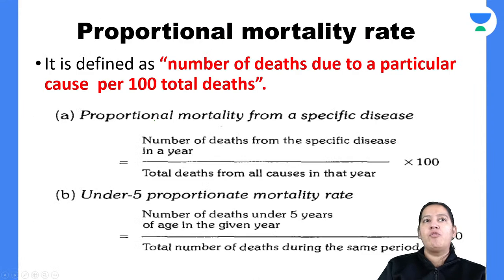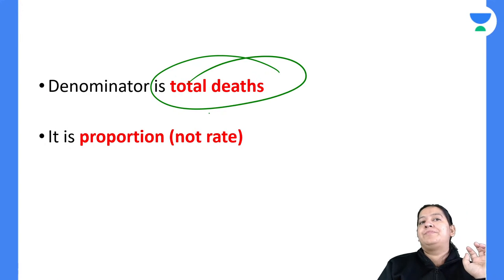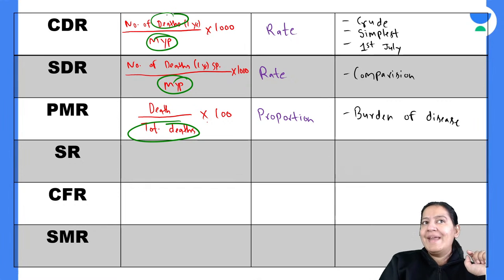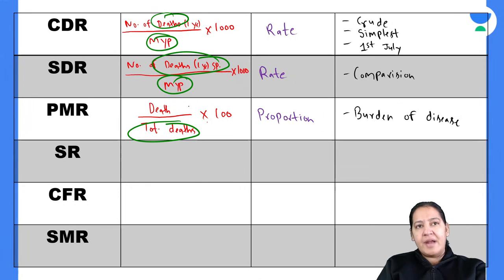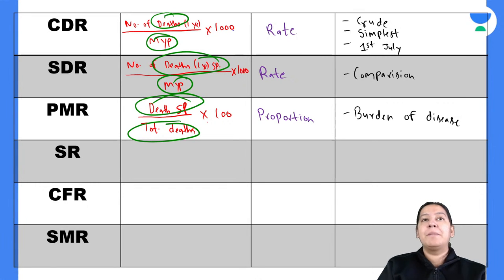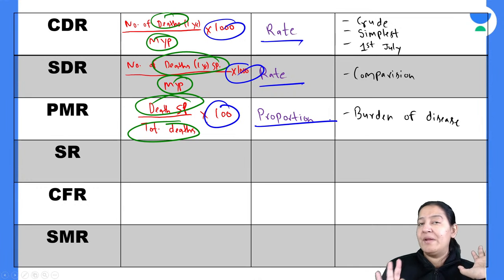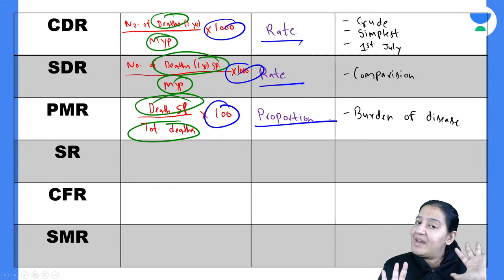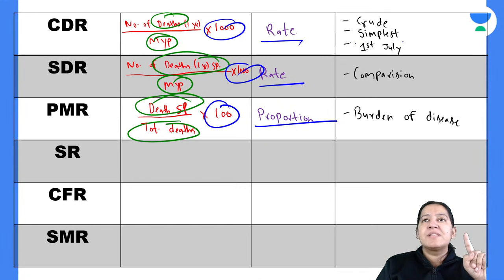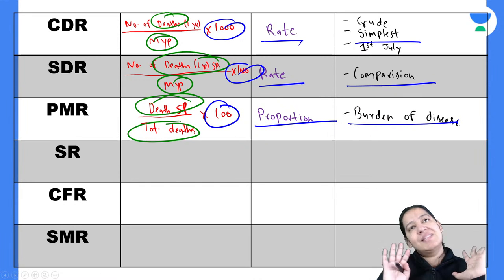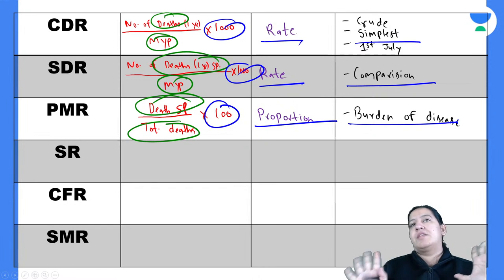PMR: denominator is total death, it is a proportion not a rate. Comparing the three: CDR and SDR both have mid-year population in the denominator, PMR has total death. CDR numerator is all deaths, SDR and PMR numerators are specific deaths. Multiplier for CDR and SDR is 1000 (rate), for PMR it is 100 (proportion). CDR is simplest, SDR is good for comparison, PMR indicates burden of disease.